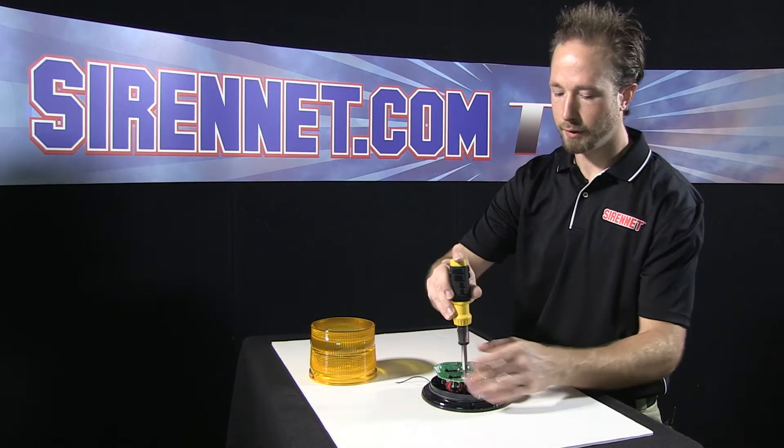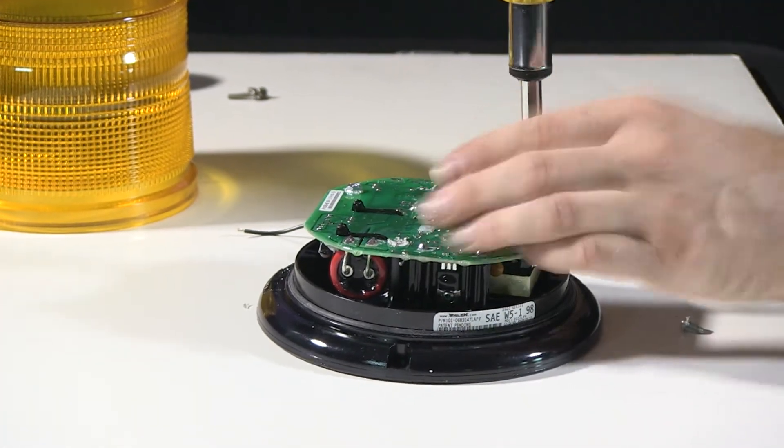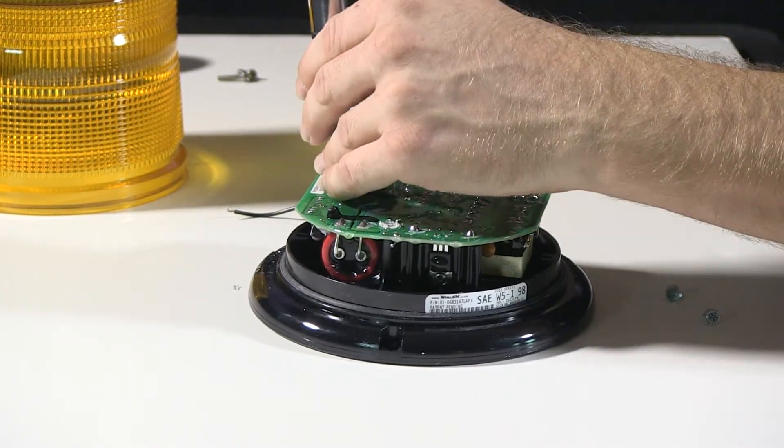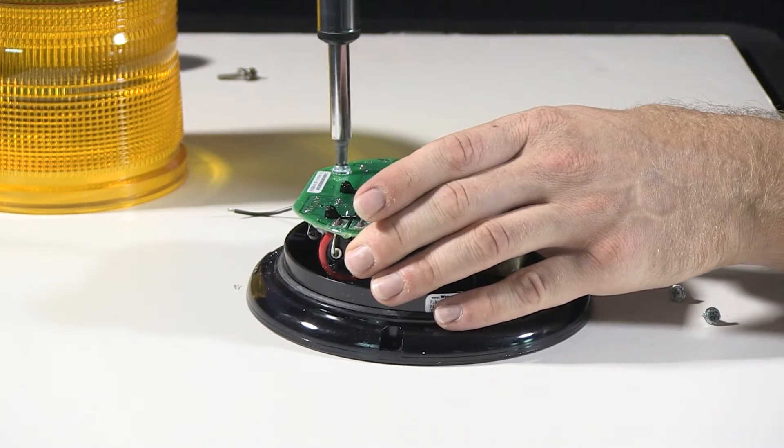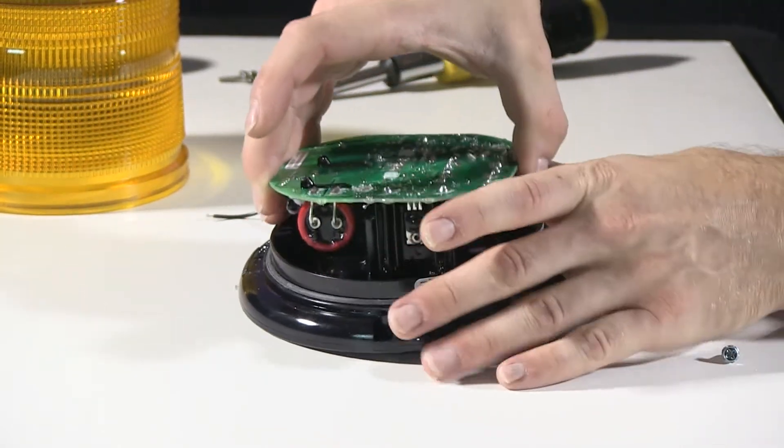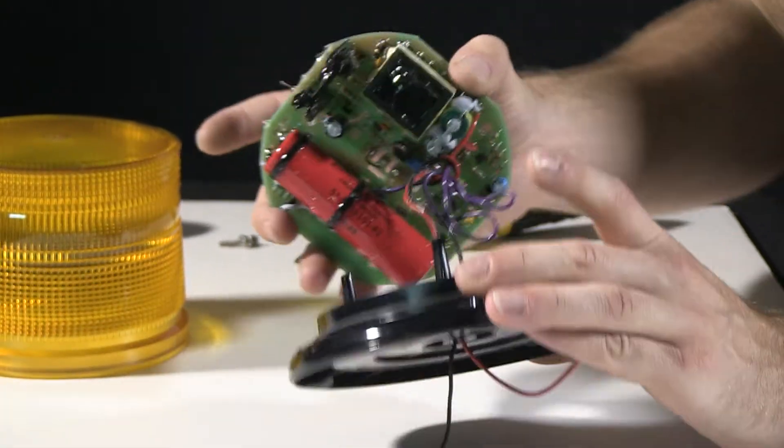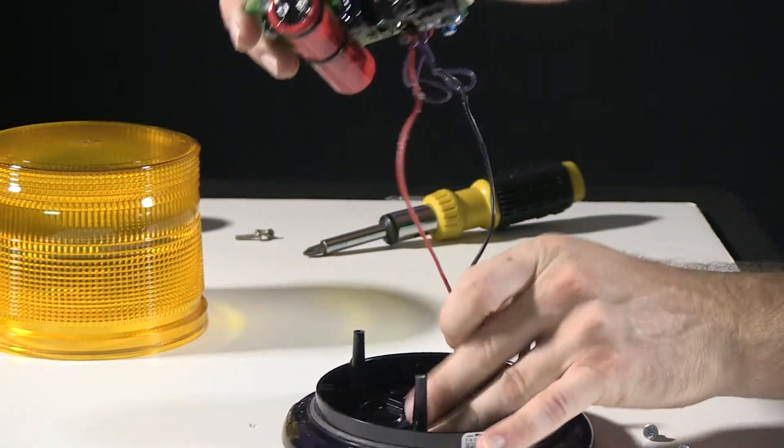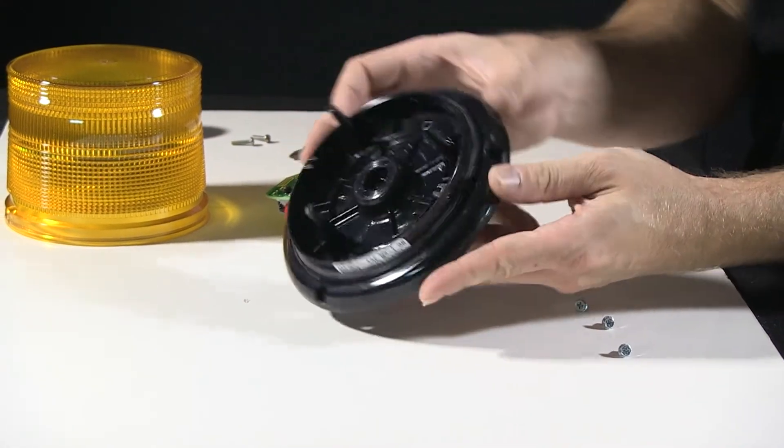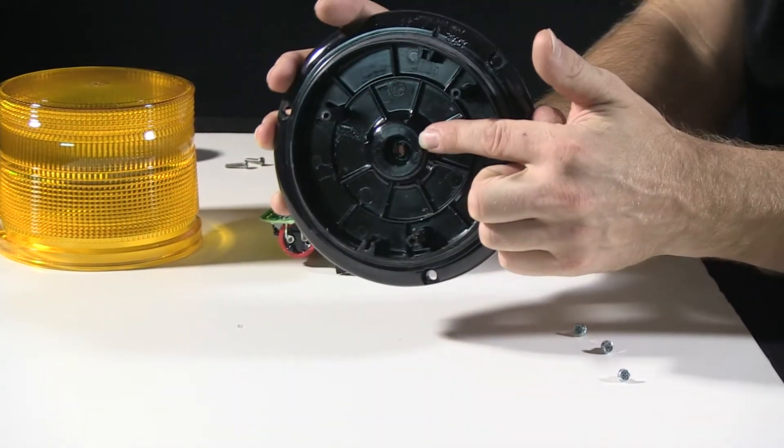Power supply is held to the polycarbonate base with three screws. I'll go ahead and slide the power supply out with the wiring harness as well. So here's your polycarbonate base assembly, completely free of all the other components. So you have your three posts here, center hole for your wiring.